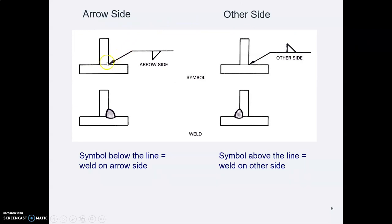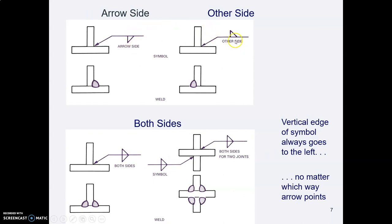If you want them to weld the joint that you are actually pointing at, then you put the symbol under the line. That means weld on the arrow side. In some situations you can point to a side, but you really want them to weld on the other side. In a case like that, you put the symbol above the line and that means weld on the other side. Symbol below means arrow side, symbol above means other side.